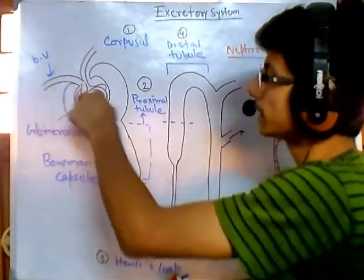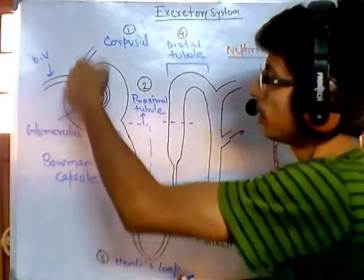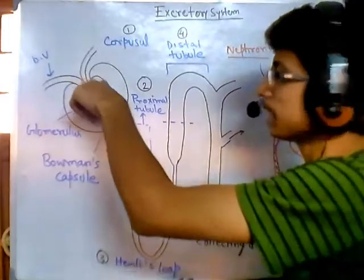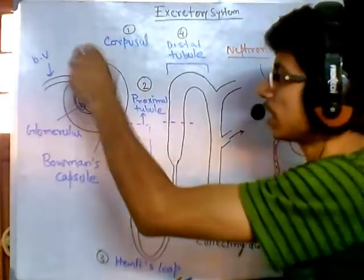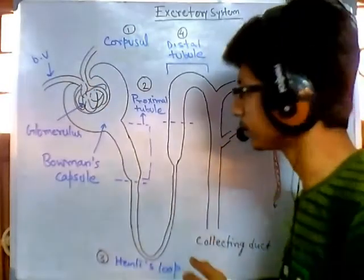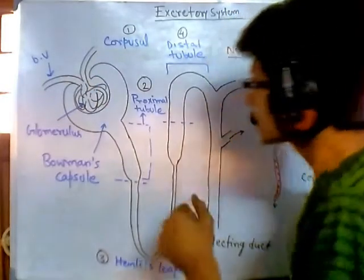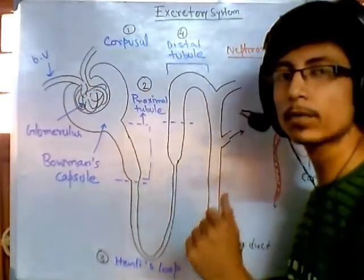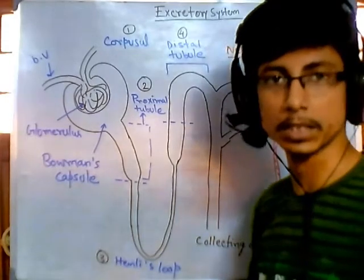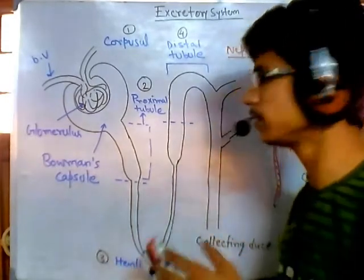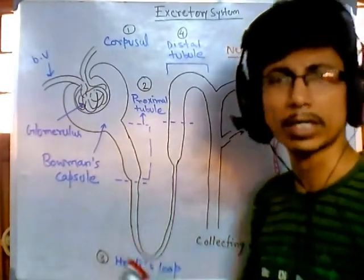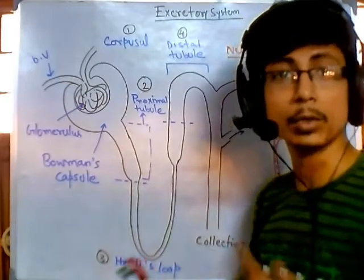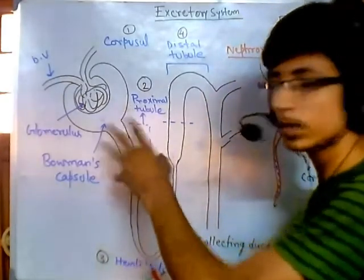Remember, a blood vessel is there — this whole thing here is the blood vessel coming in and going out, just a kind of pressure gradient creation. The second part, the proximal tubule, is important for reabsorption of some nutrients — very vital nutrients like water, sodium ion, vitamins, and glucose. So absorption of those.